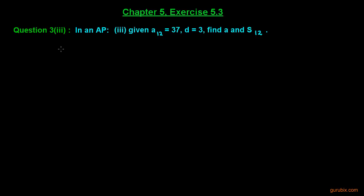This is the third part of question 3 of exercise 5.3 of chapter 5. In this question we are given A₁₂. This means the 12th term is given and that is 37. We are also given the common difference which is 3, and we have to find the first term and the sum of first 12 terms. Let us see how to solve this question.